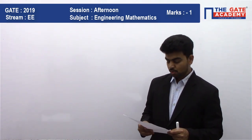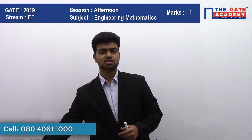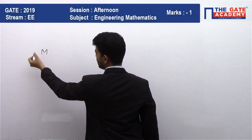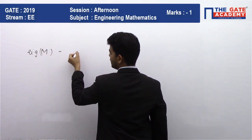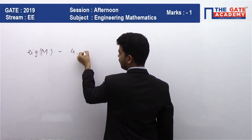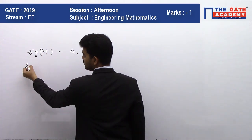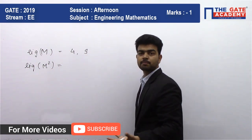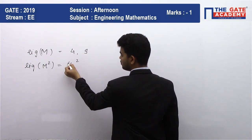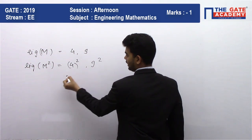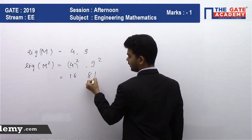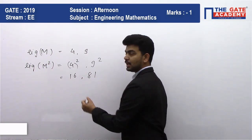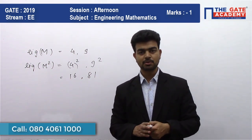It is a very simple question based on eigenvalue properties. As we know, if the eigenvalues of M are given as 4 and 9, then the eigenvalues of M squared will be the square of those eigenvalues. So the eigenvalues will be squared and we get 16 and 81. The eigenvalues of M squared are 16 and 81.